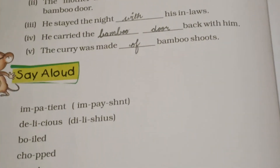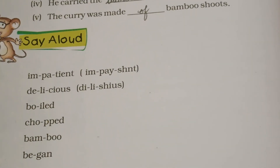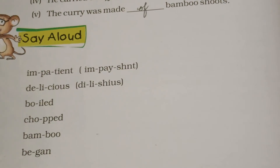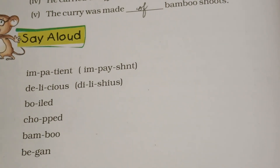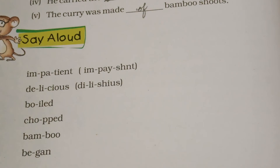Children, you have to say aloud these words: impatient — im-pa-tient; delicious — de-li-cious; boiled; chopped; bamboo — bam-boo; began.